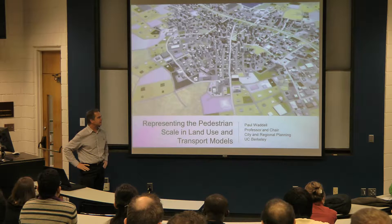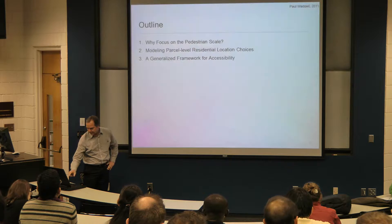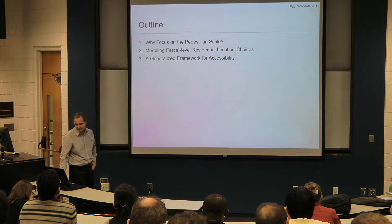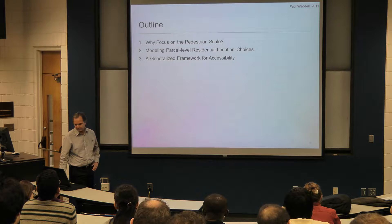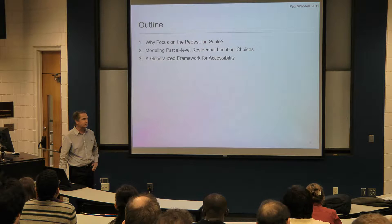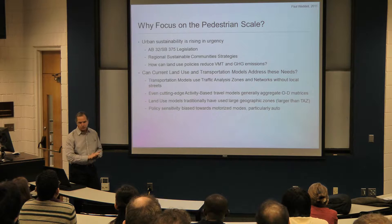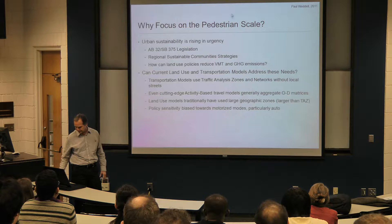What I'm going to talk about today is a topic that I am quite interested in: representing the pedestrian scale in integrated land use and transportation planning and modeling. I'll explain, first of all, my motivation — why to do this. Second, give an example in a research context of how to address this in terms of personal-level residential location choices based on work that I've done with a former PhD student. And then move into recent work that we've been doing to create a generalized accessibility framework that would support pedestrian and bicycling scale policy.